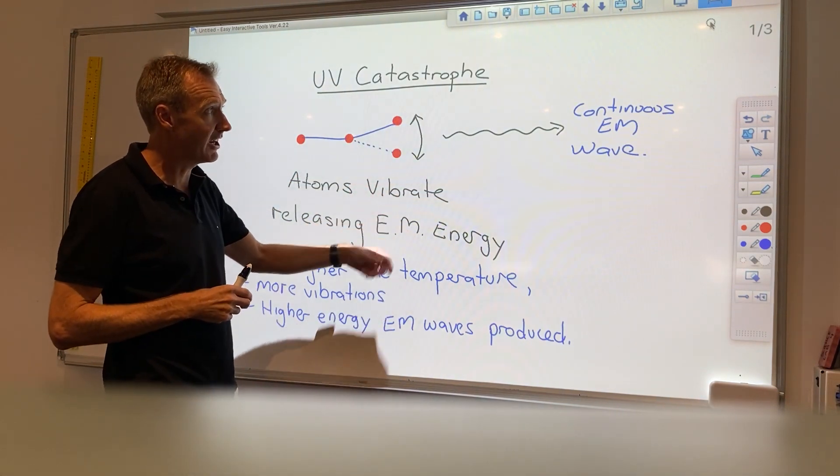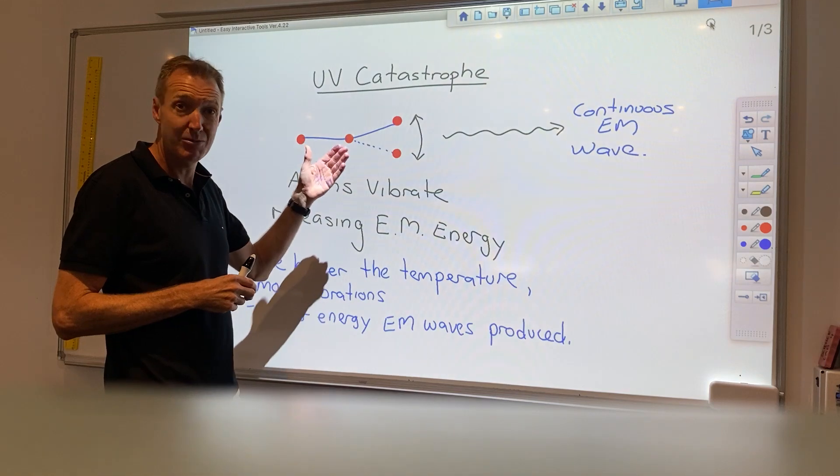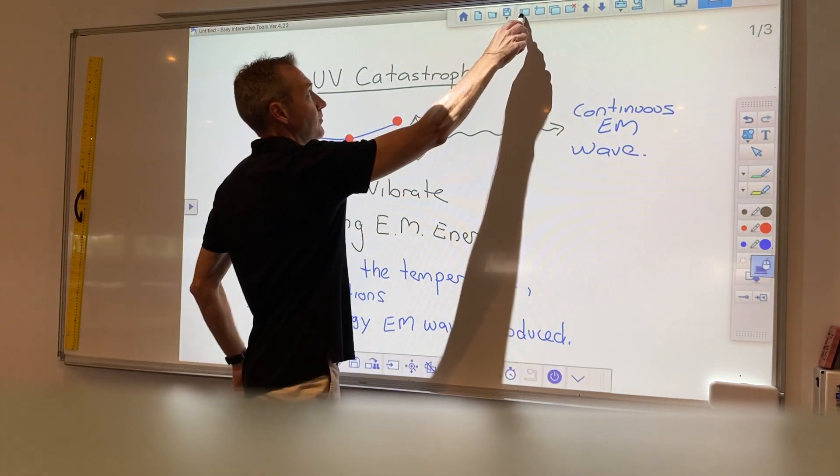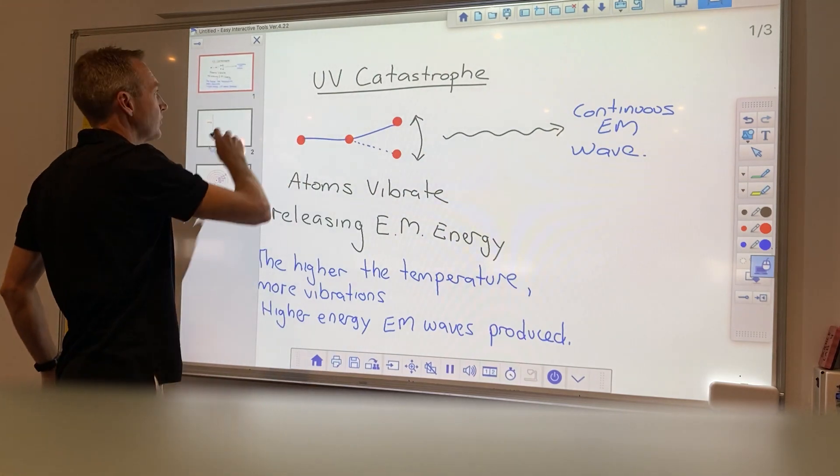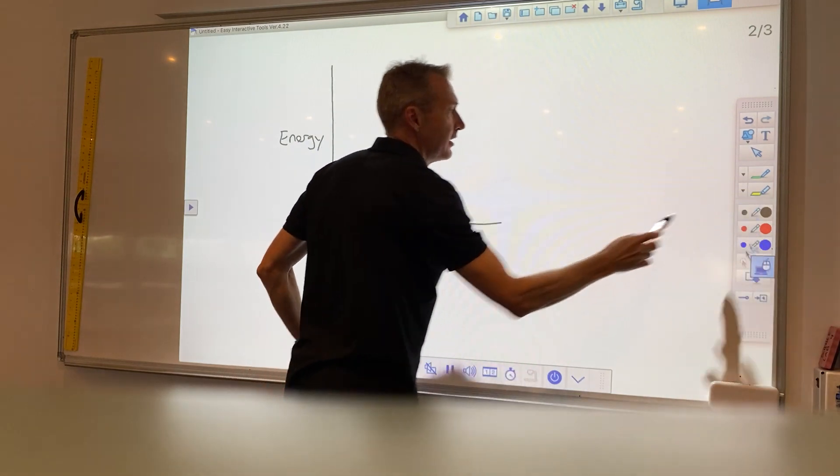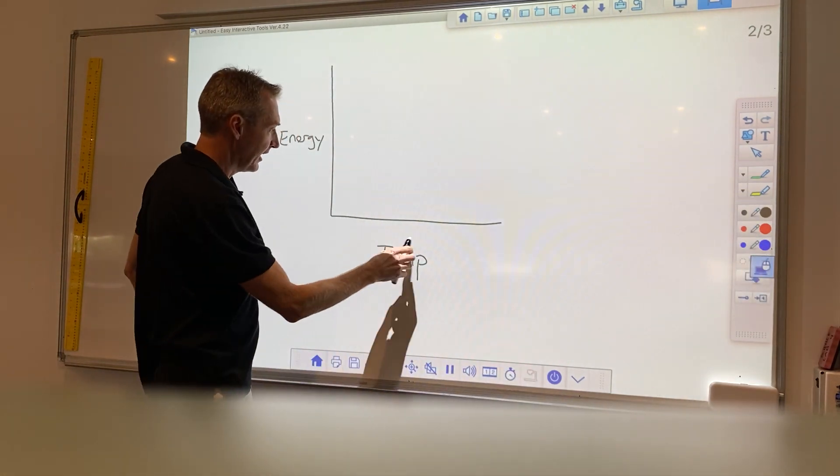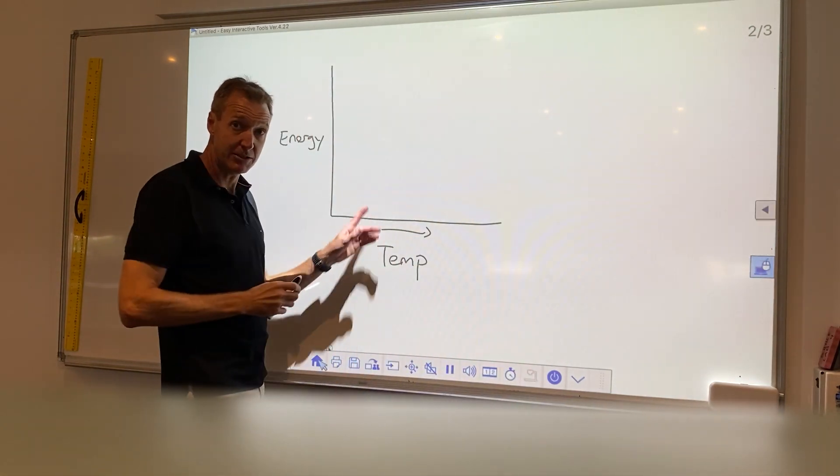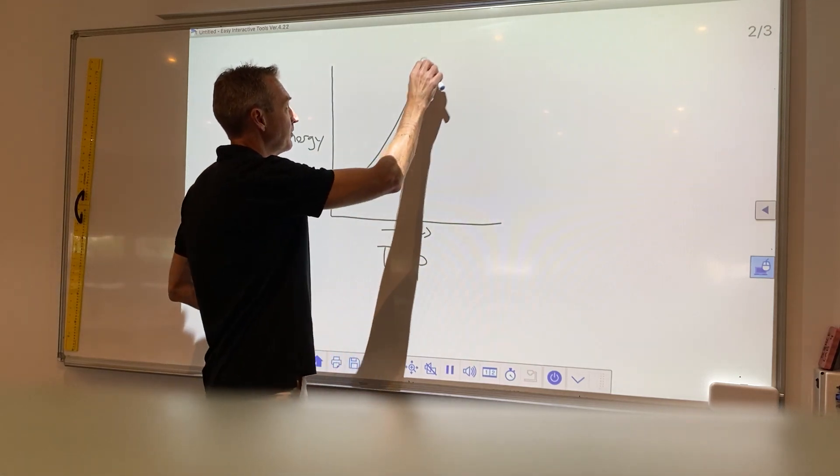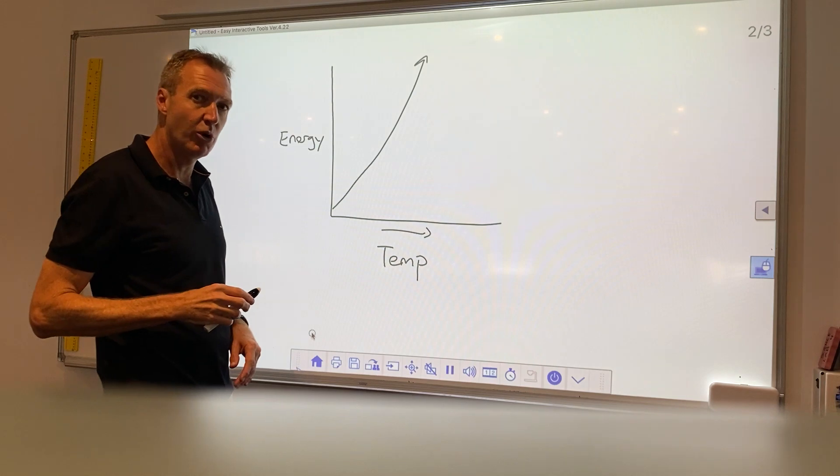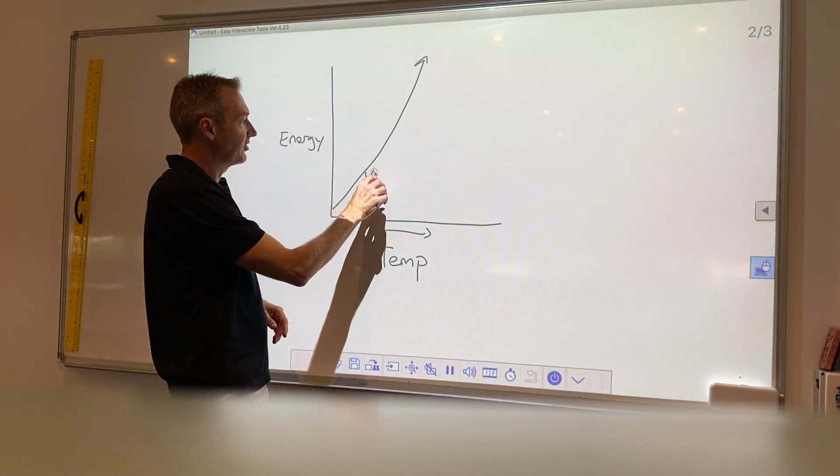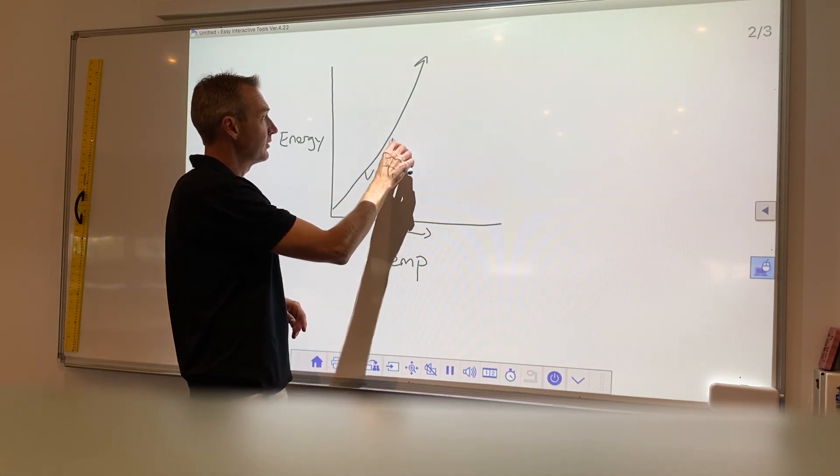For example, as you increase the temperature, you should have gotten basically more and more energy out of the wave. So we might have had visible light here, UV.